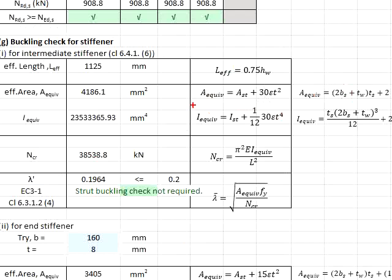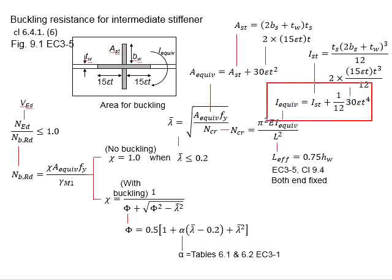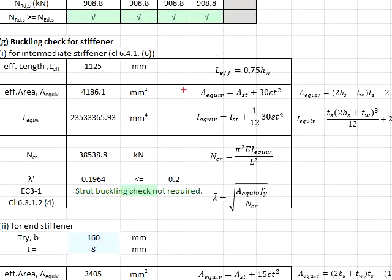And then next, the equivalent second moment of inertia is obtained by using these equations. The second moment of inertia here is referring to a rotation in this axis. From there, we obtain an equivalent area and also the second moment of inertia.